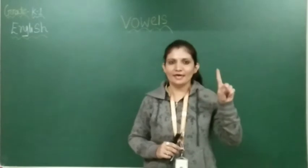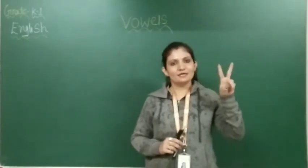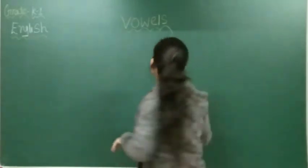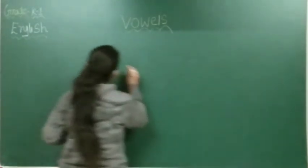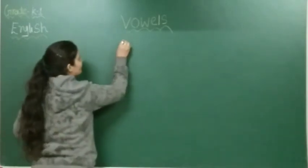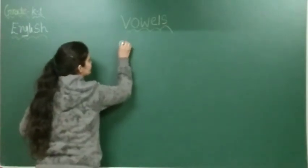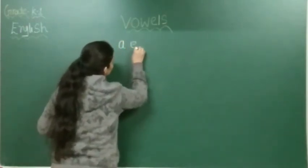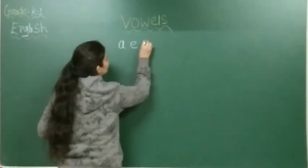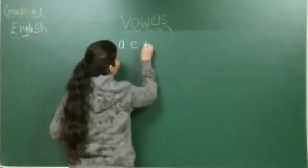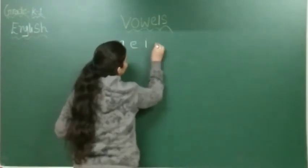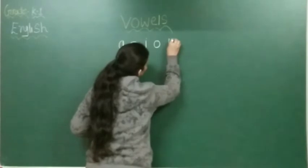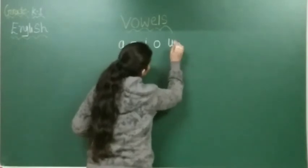And which are they? A, E, I, O, U. See here — we are having five vowels: A, E, I, O, U.